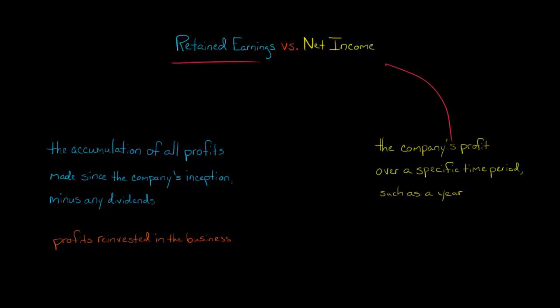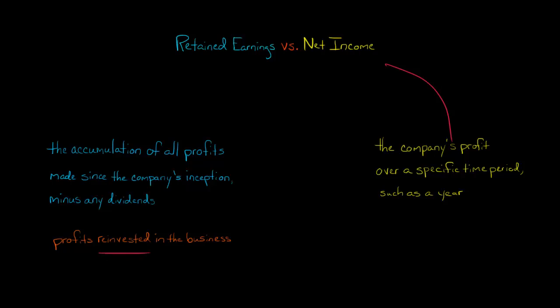Retained earnings, on the other hand, is all the profits the company has ever had since the very first day they opened their doors for business, minus any dividends distributed to shareholders. You can think of this as profits the company has kept and chosen to reinvest in the business — if they pay profits out as dividends, those obviously haven't been reinvested.